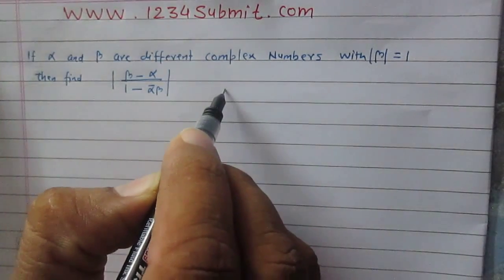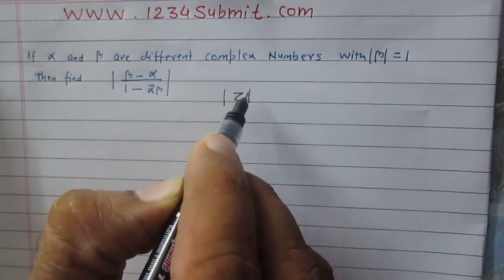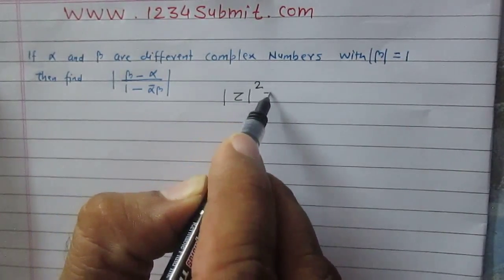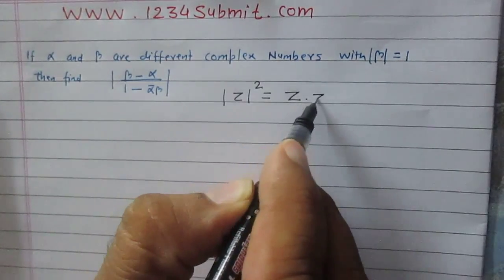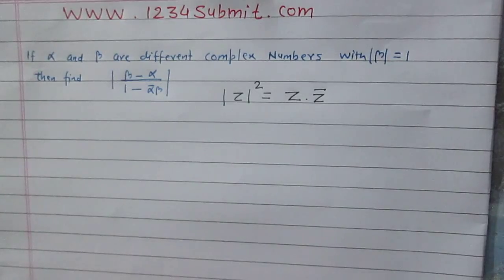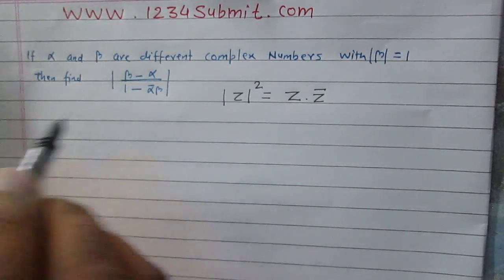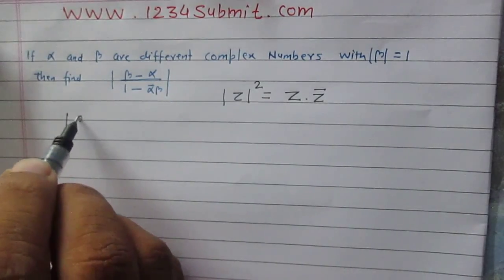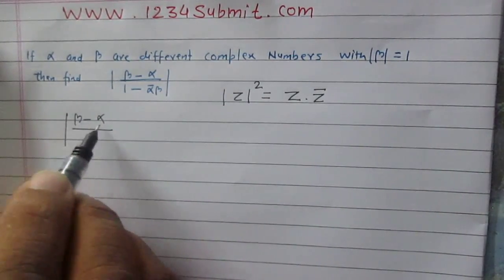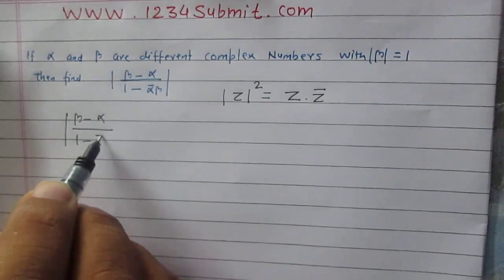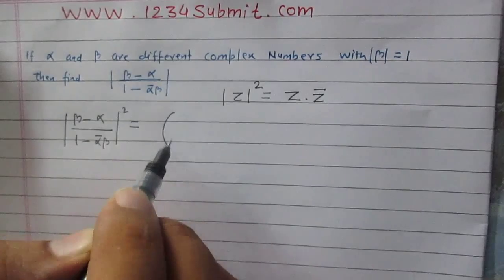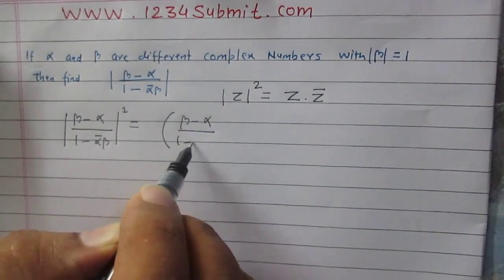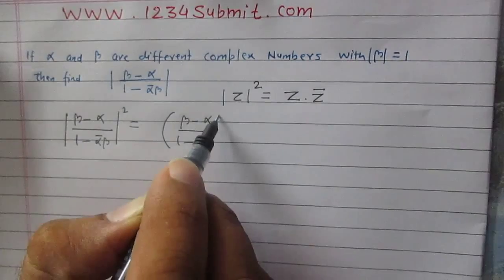Now we know the property of complex numbers that the square of the modulus of a complex number is equal to the multiplication of the complex number and its conjugate. So we can use this property here: we can write that the square of the modulus of the complex number (beta minus alpha) / (1 minus alpha conjugate beta) is equal to the complex number itself multiplied by its conjugate.